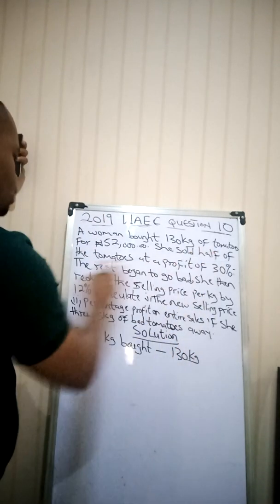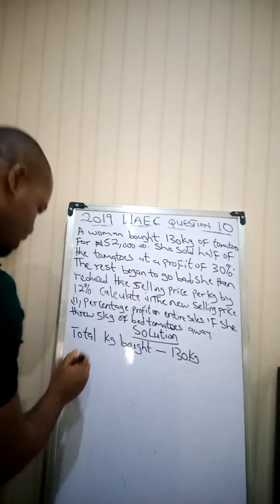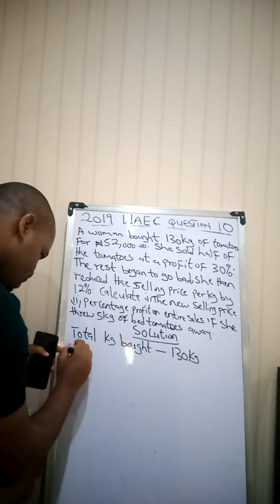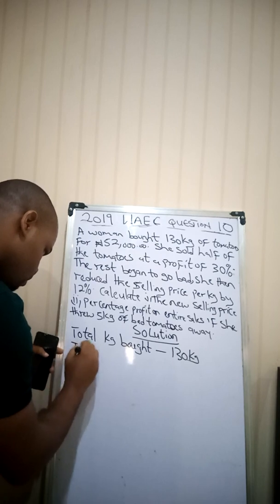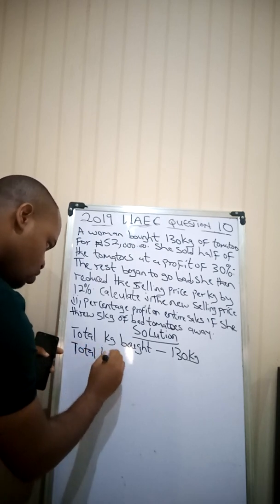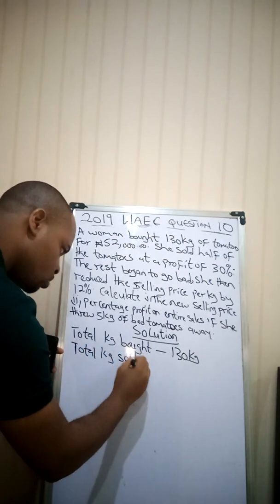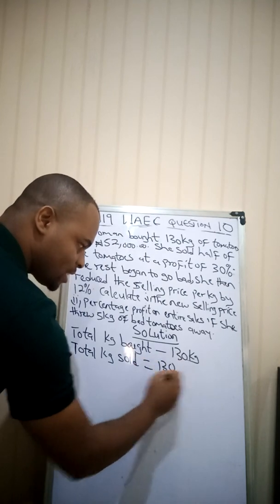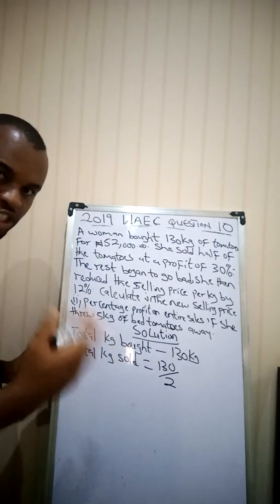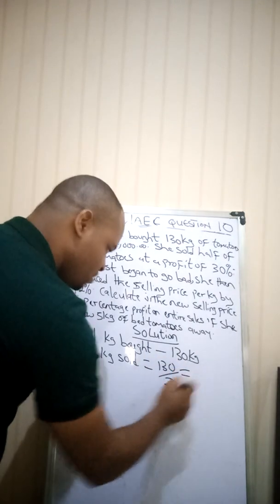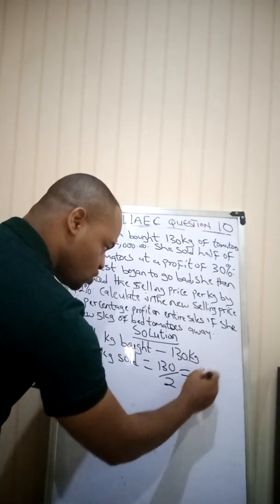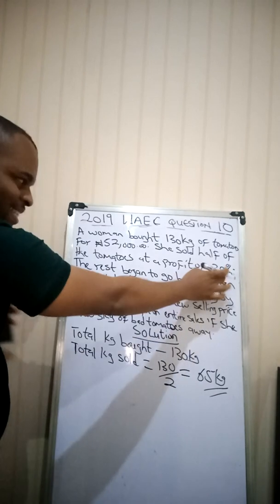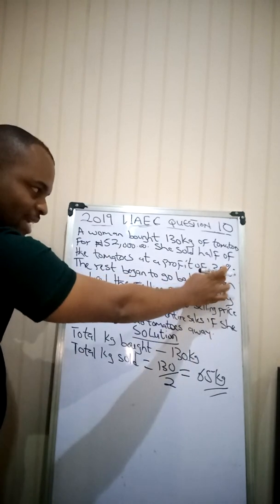It says she sold half of the tomatoes. Total kg sold will be equal to 130 over 2, because they say she sold half of it, which gives me 65 kg. So this was what she sold at this profit.